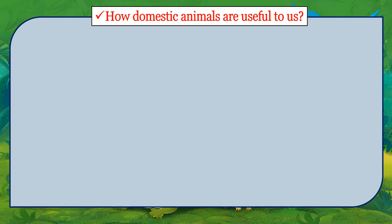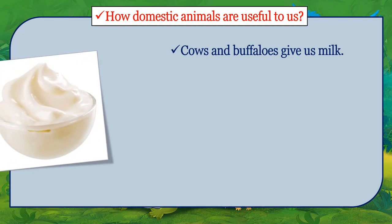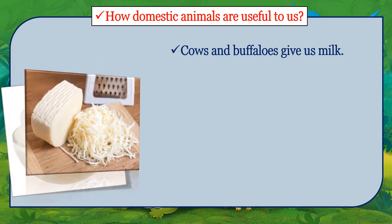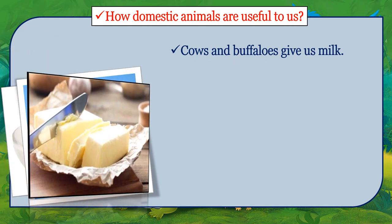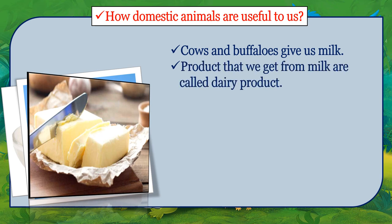Now, how are domestic animals useful to us, children? Animals are useful to us in many ways. Cows and buffaloes give us milk. From milk, many items are made, like yogurt, cheese, ice cream, butter, etc. Products that we get from milk are called dairy products.